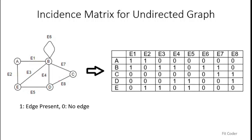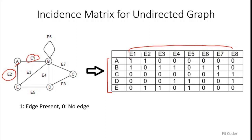This graph has five vertices A, B, C, D, E and all the edges are labeled E1 to E8. The first step is to list all the vertices row-wise — A, B, C, D, E — and all the edges in columns E1 to E8. For each vertex we check which edges it is connected with. Vertex A is connected with E1 and E2, so in the A row we fill 1 for E1 and E2 and 0 for all other edges.